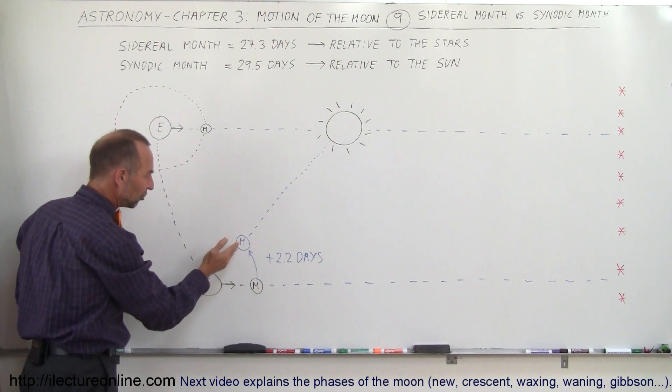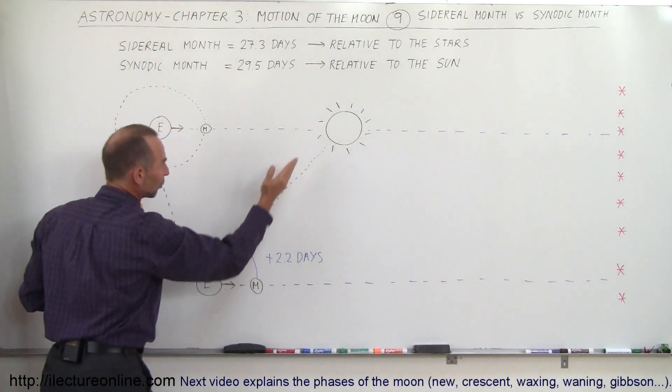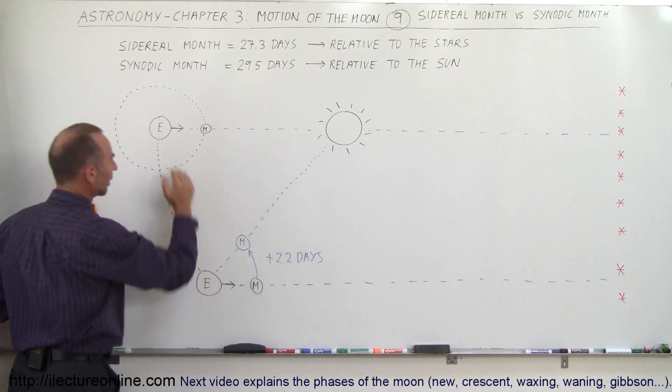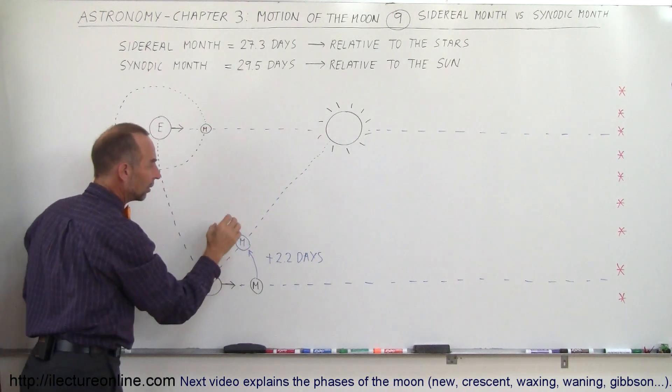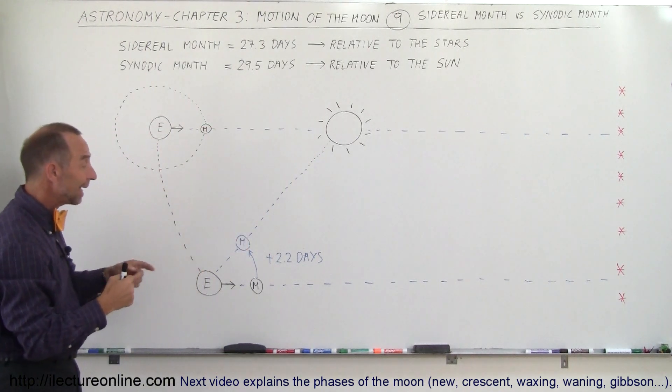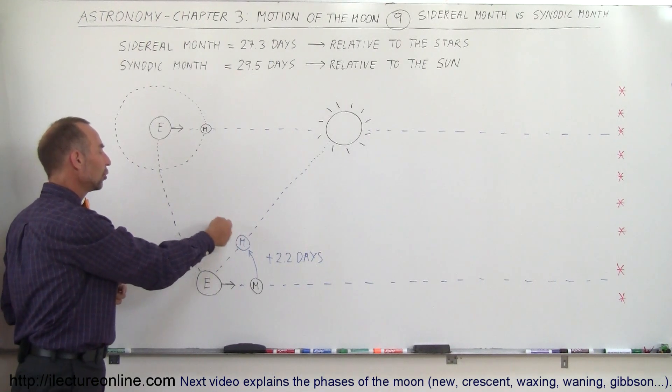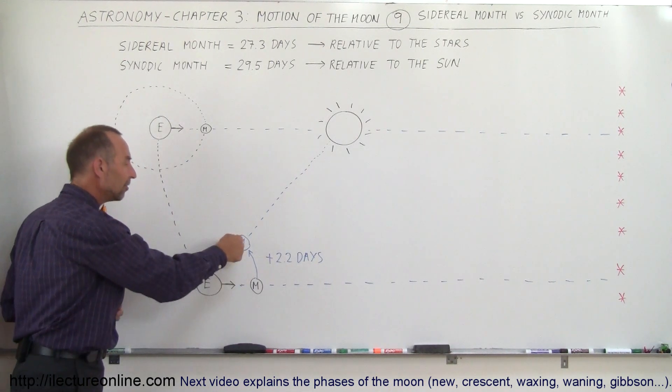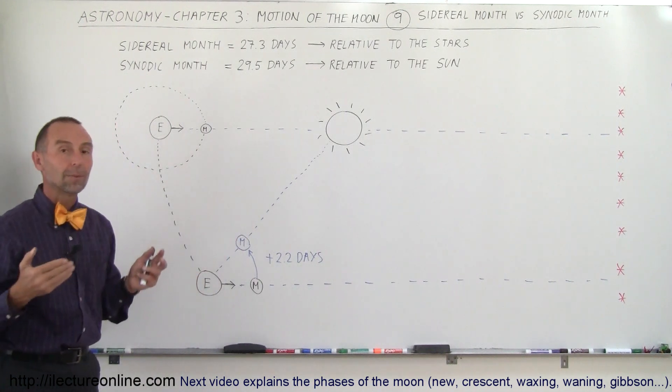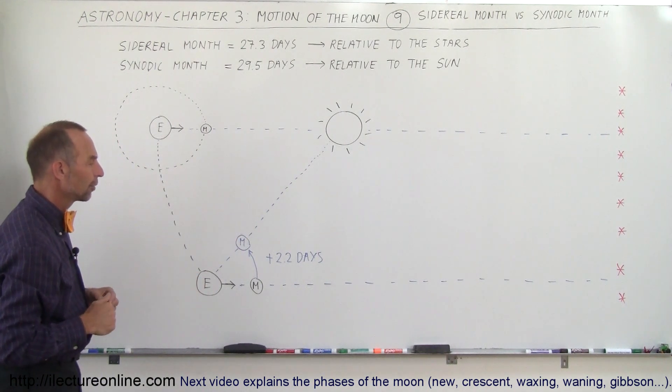And for the moon to get back to that position, so it forms the correct line again between the sun, the moon, and the earth like this, just like it did here, so that again the moon will be a new moon, that takes an additional 2.2 days for a total of 29.5 days for the moon to go all the way around and then some to get back in that same line position with the sun and the earth.